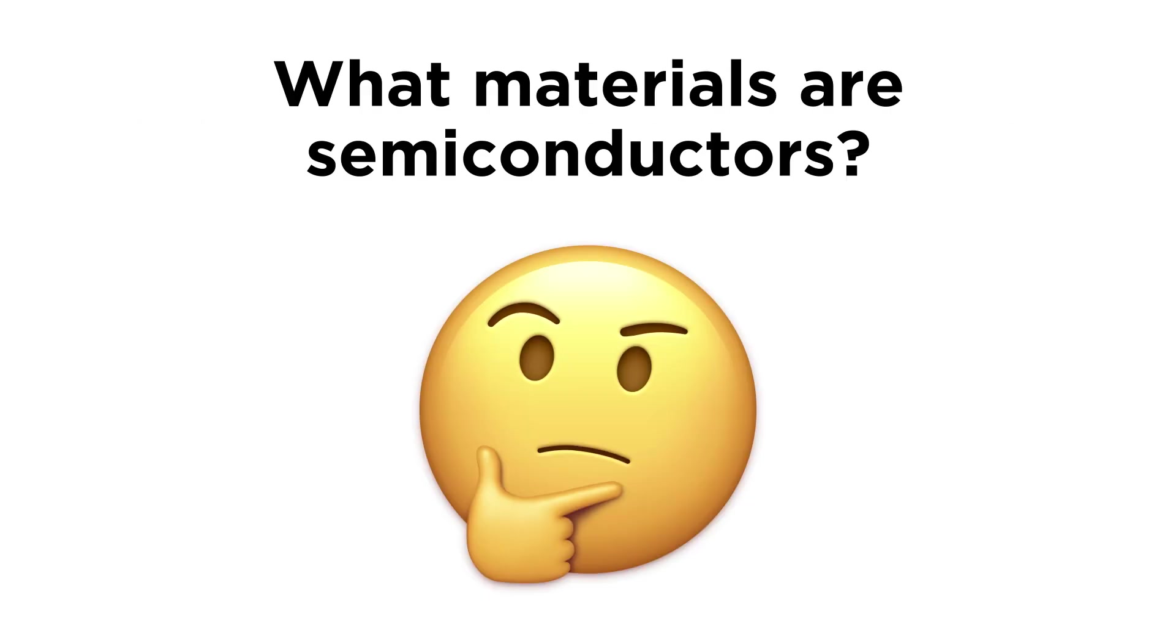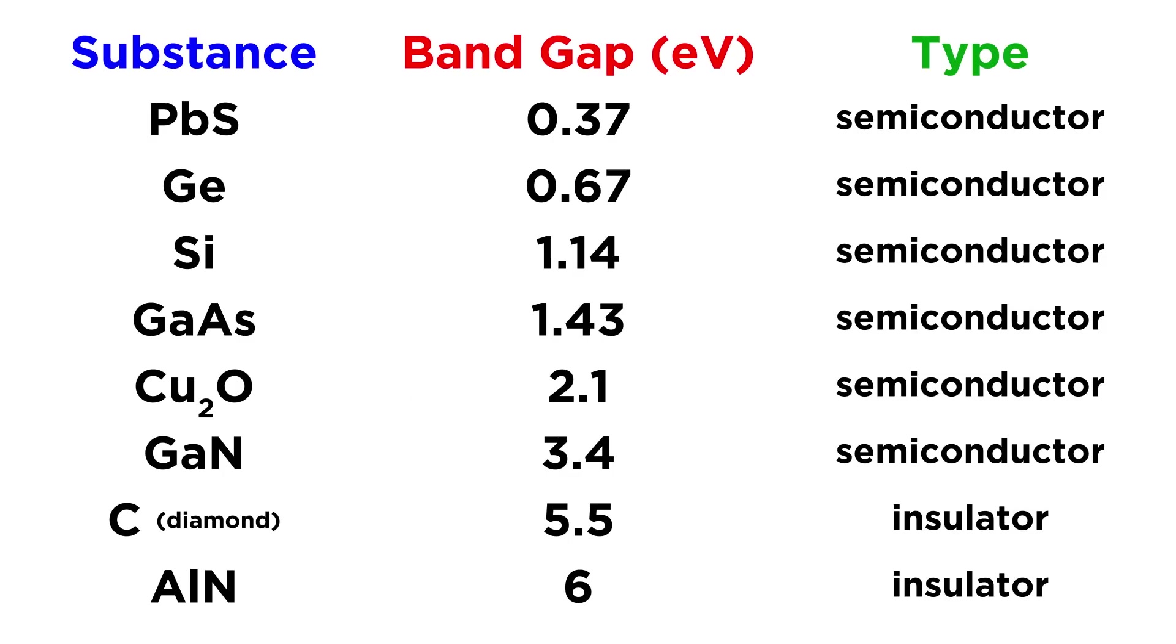So what kinds of materials can act as semiconductors? Here are some common substances along with their respective band gaps in electron volts, so we can get a sense of the range that is permissible. We will notice that some of these substances are elements like silicon and germanium, and some are compounds like lead sulfide. Once the band gap becomes sufficiently large, a substance will become an insulator, like diamond or aluminum nitride.